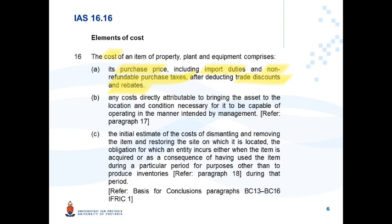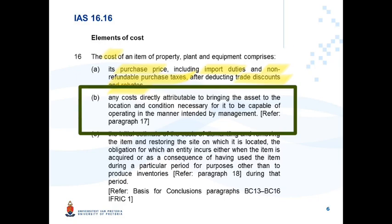Paragraph 16b is the main principle when deciding whether a cost should be included or not. It states that any cost directly attributable to bringing the asset to the location and condition necessary for it to be capable of operating in the manner intended by management is included in the cost price of the item. IAS 16 paragraph 17 gives us guidance on what directly attributable costs are.